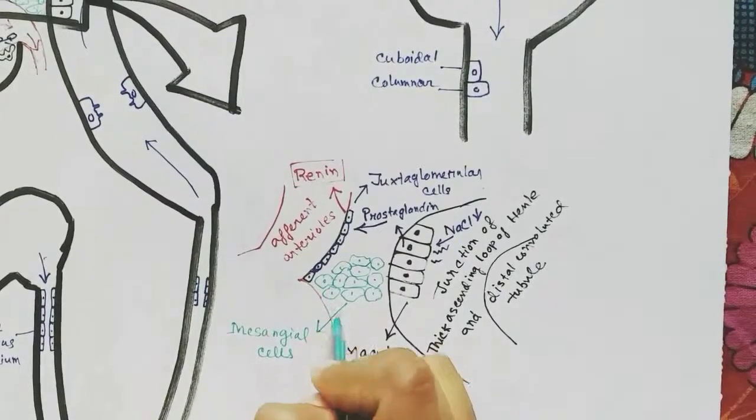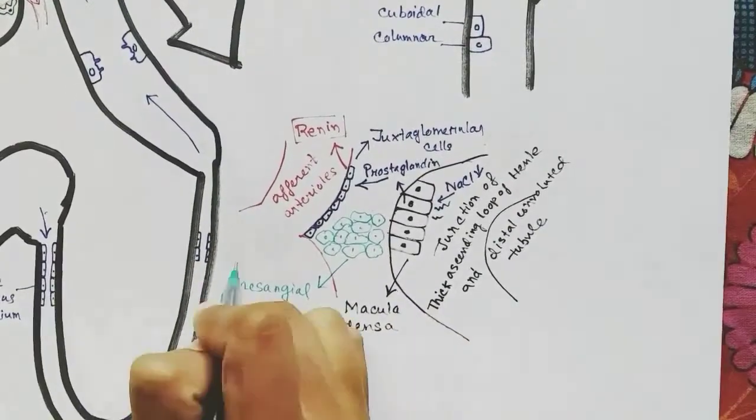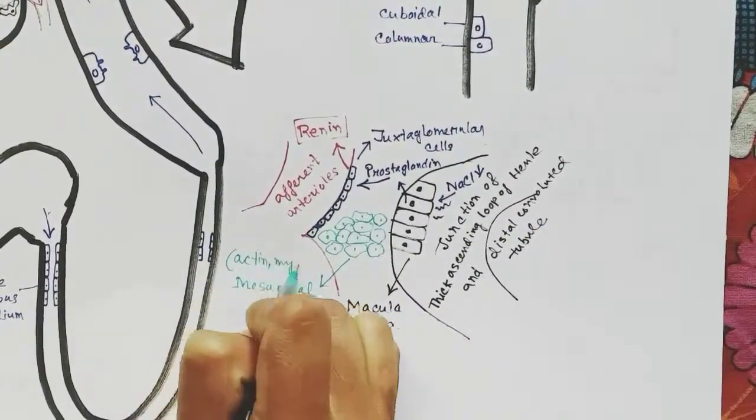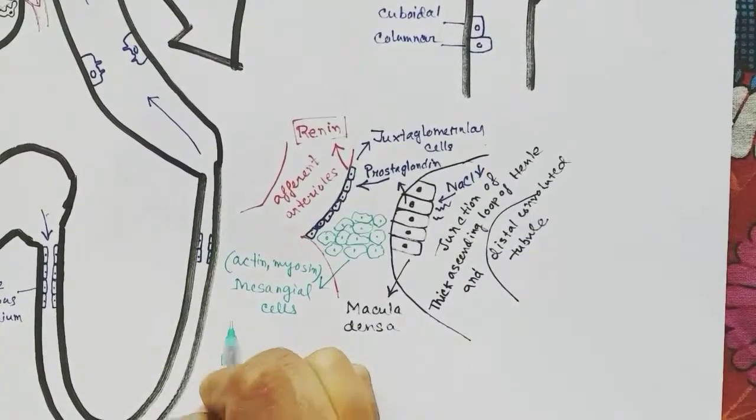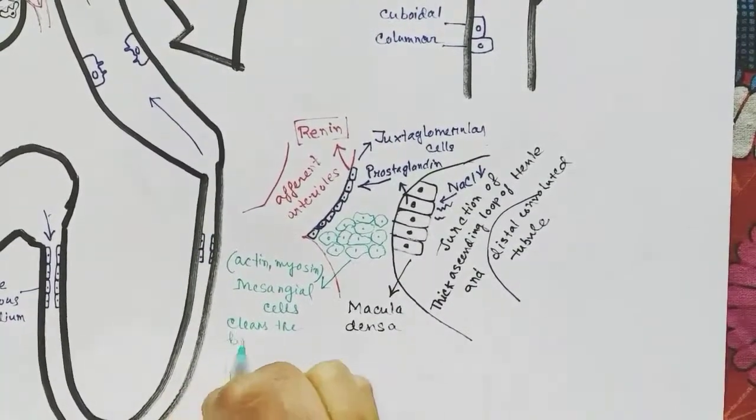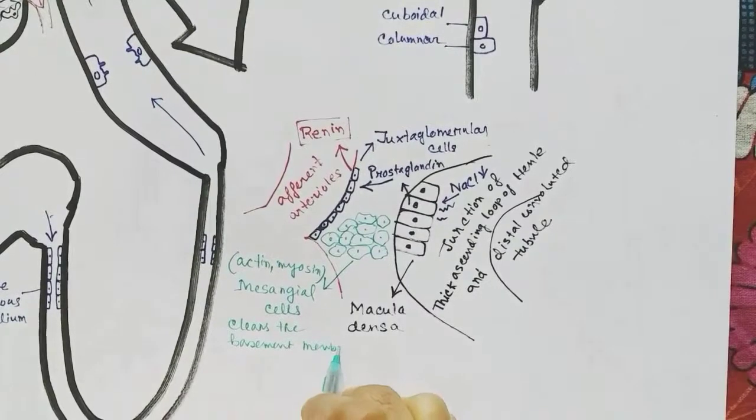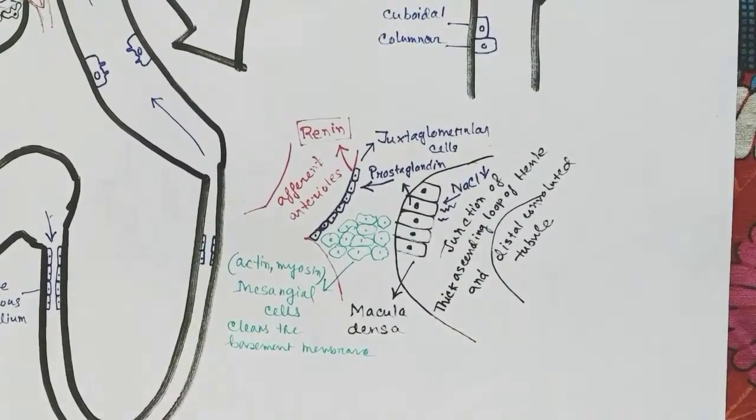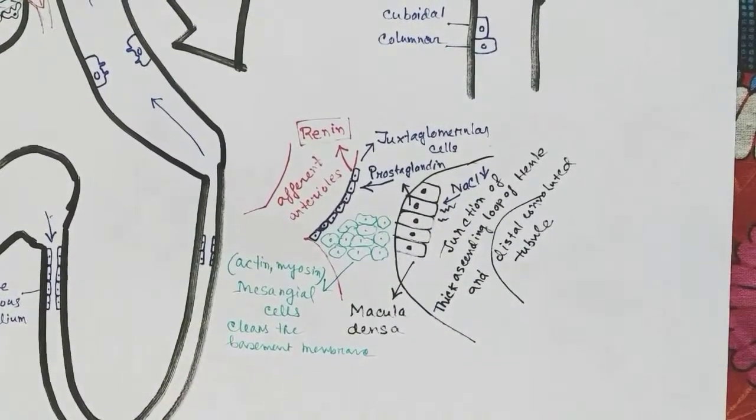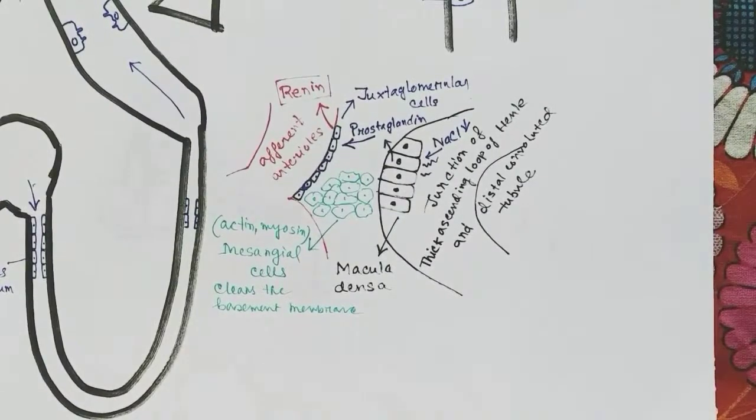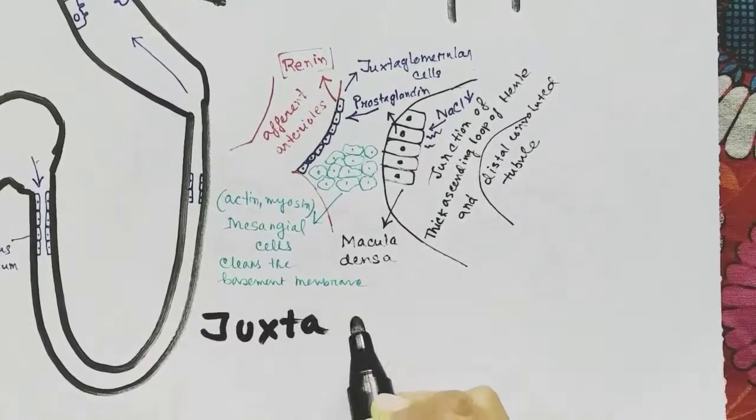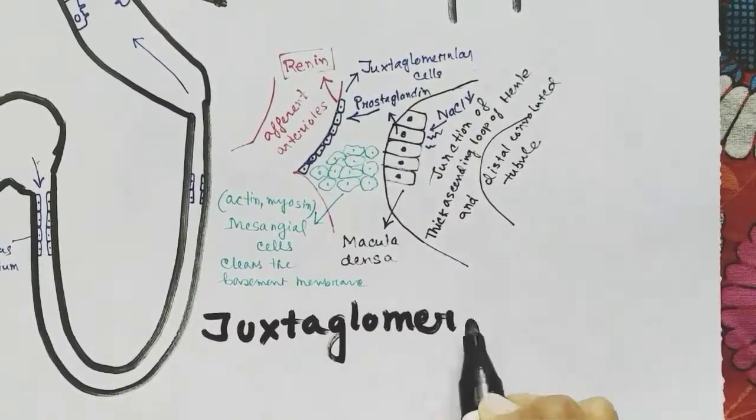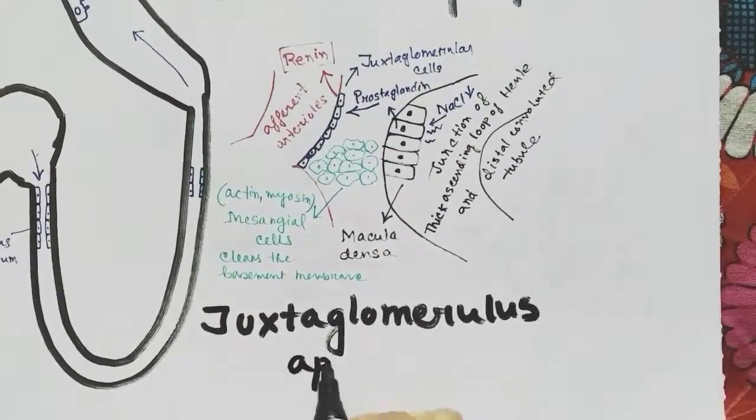The mesangeal cells have actin and myosin within them, which helps these cells contract and clean debris from the basement membrane for better filtration. These three cells together make the juxtaglomerular apparatus.